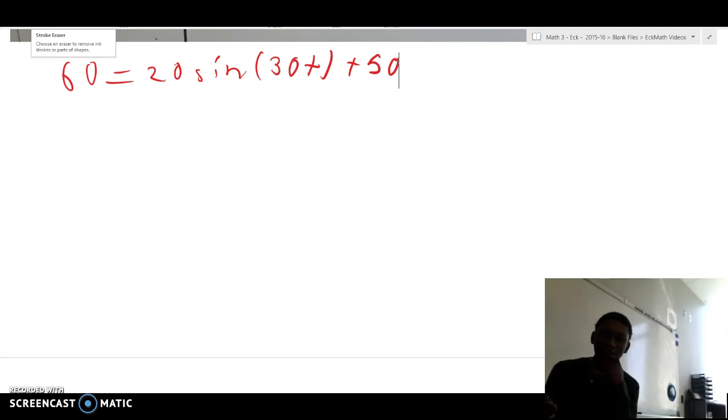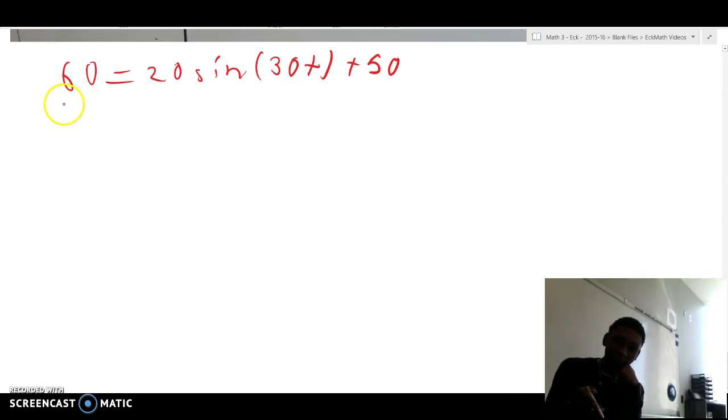This is the equation that we should use to solve the problem. Because we're using 60 coyotes and trying to find the time in which there are 60 coyotes, we're going to have 60 replace our c, because c represents coyote. And so, 60 equals 20 sine 30t plus 50.